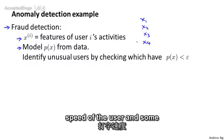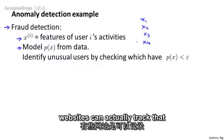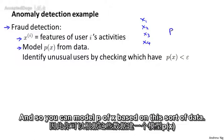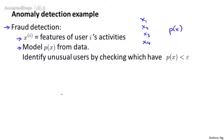A feature X4 could be, what is the typing speed of the user? And some websites can actually track that. So what's the typing speed of this user in characters per second? And so you can model P of X based on this sort of data.